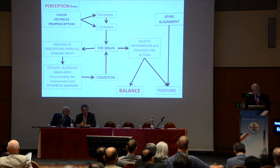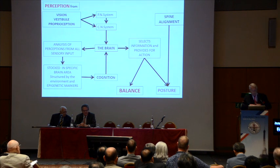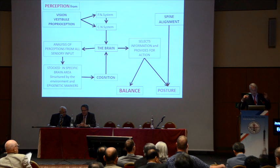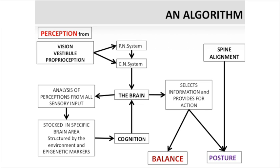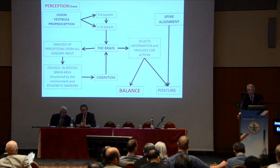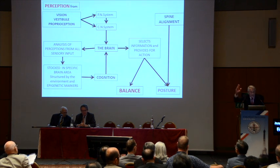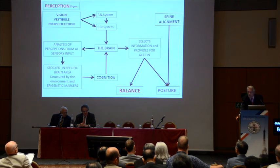Every act you make after that comes from the command of the brain, including your posture. In this algorithm, perception comes first through vision, vestibule, proprioception, et cetera. It goes through the central and peripheral system, goes to the brain. The brain makes the analysis of perception and also stores the perception in different areas of memory and cognition. This cognition of the brain is now capable of helping select the information to provide for the appropriate action — and here I come back to us, to the spine surgeon — the appropriate action requires spine alignment. It's for that reason that spine alignment is so important; it has to be maintained no matter what.